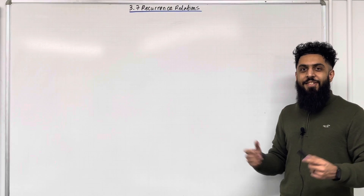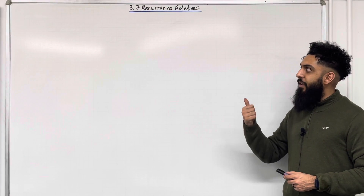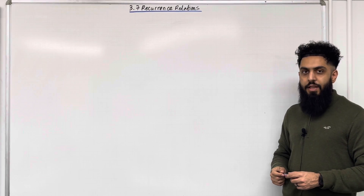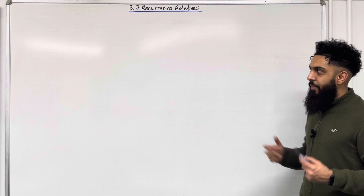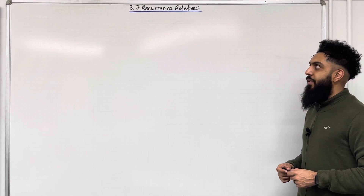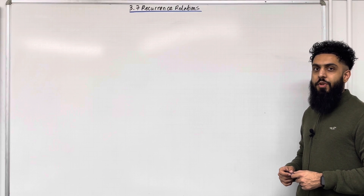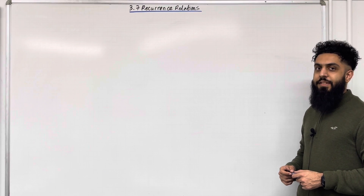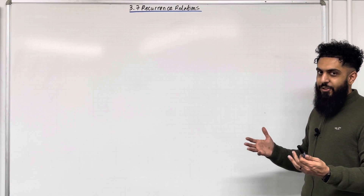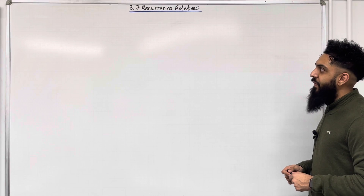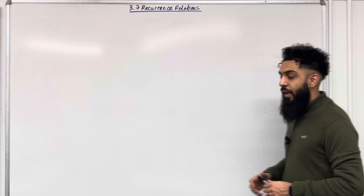Welcome back. In this YouTube video, I'm looking at 3.7 Recurrence Relations. 3.7 represents Chapter 3, Section 7 of the Pearson A Level Maths Pure Maths Year 2 textbook. Let's go through the key facts of this section.